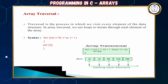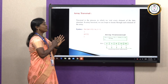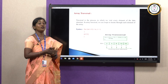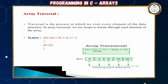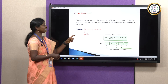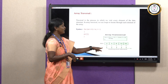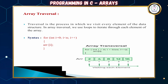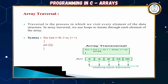Array traversal is the process of visiting every element of the array from index 0 to n-1. The use of traversal is to search, sort, insert, or delete elements. Using a for loop: for(int i = 0; i < 10; i++) with ARR[i]. For example, with 5 elements, i goes from 0 to 4, visiting each position.